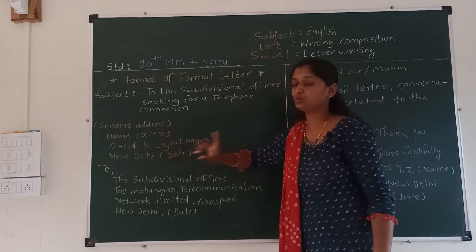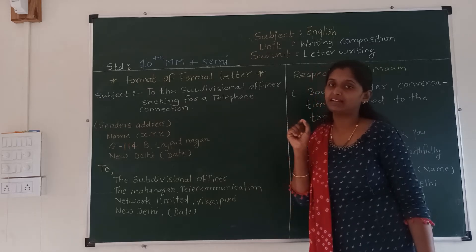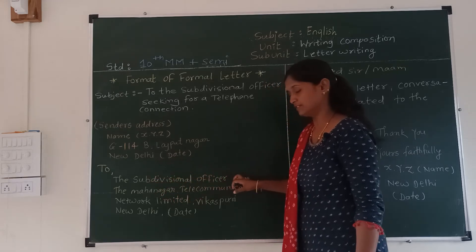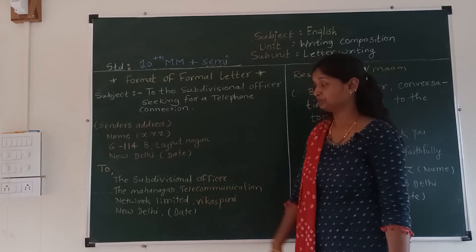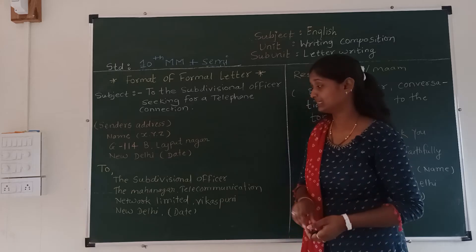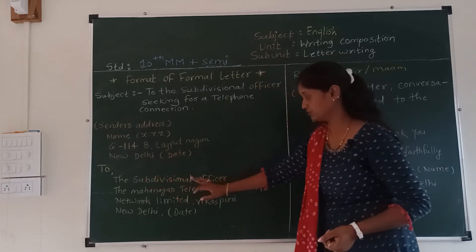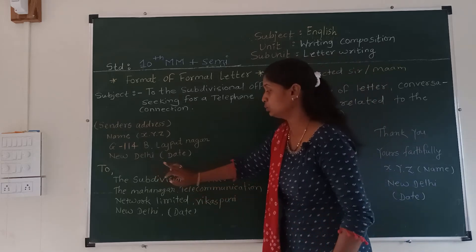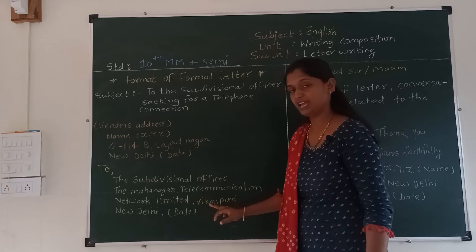After writing the name and address, you must write the date. Then next is the receiver's address: the subdivisional officer, the Mahanagar Telecommunication Network Limited, Vikas Puri, New Delhi. Here is the receiver's address — to whom you are writing the letter. So write the subdivisional officer's address: to the subdivisional officer, Mahanagar Telecommunication Network Limited, Vikas Puri, New Delhi.